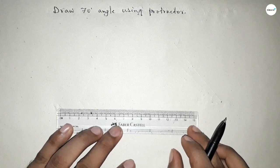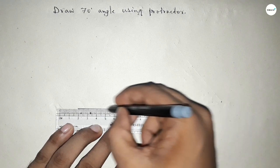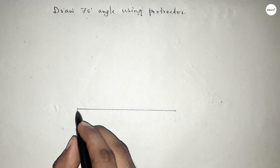First of all we have to draw a line of any length. So first drawing a line of any length here. Now marking here a point.